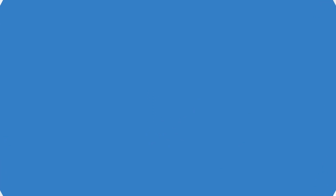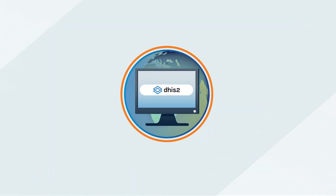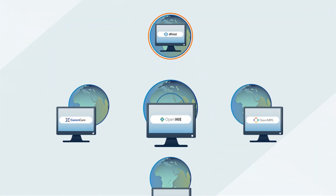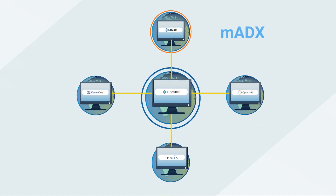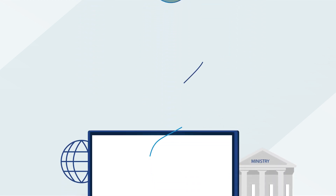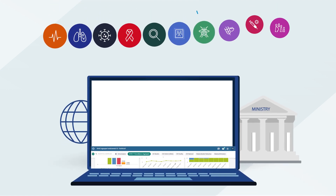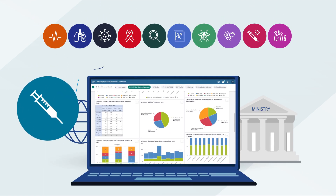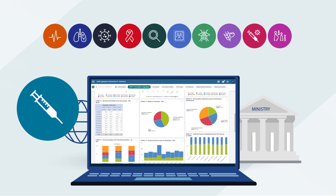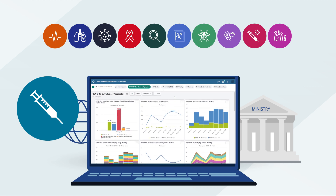DHIS2 can be extended with custom apps, and it also supports interoperability through the FHIR standard and open APIs, allowing countries to connect their DHIS2 systems to a variety of digital tools, including many global goods, moving data out of silos and into an enterprise. HISP UIO also publishes DHIS2 metadata packages based on global standards and indicator definitions, which can be modified based on local needs, allowing WHO's global guidance to be represented accurately across information systems.